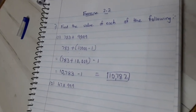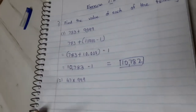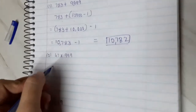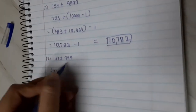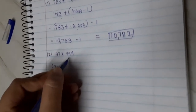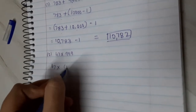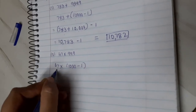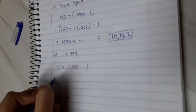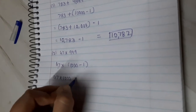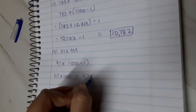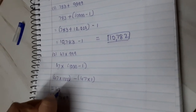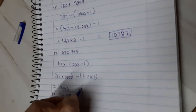Easy? Now the next one is 47 multiplied by 999. So 999 is near to 1,000, which means 1,000 minus 1. So let us distribute: 47 multiplied by 1,000 minus 47 multiplied by 1. You will get 47,000 minus 47.